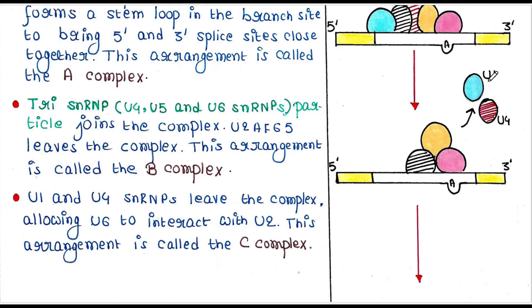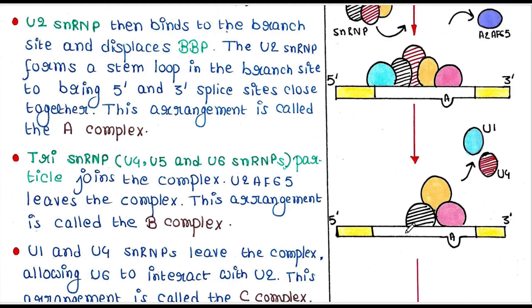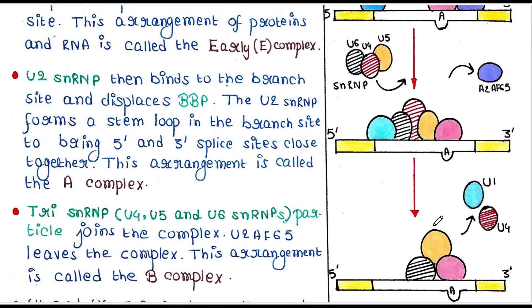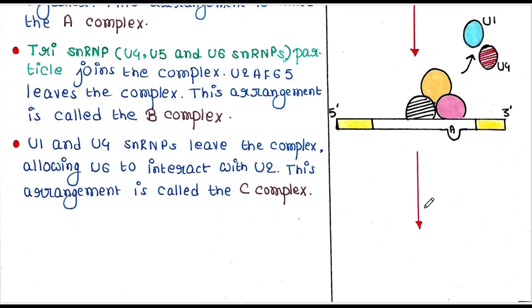Now, U1 and U4 snRNPs leave the complex and U6 interacts with U2. This arrangement is called the C complex. Here, U6 is there, U2 is there, and U5 is there. This is the C complex.